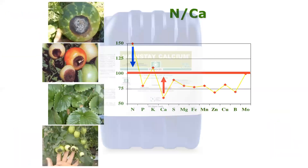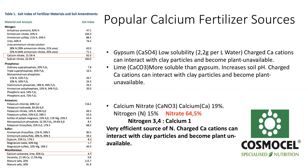Another issue with calcium nitrate is during stages when you want reproductive growth like fruit set — you don't want additional vegetative growth, which nitrogen promotes. Using a lot of nitrogen during critical reproductive stages like fruit set through calcium nitrate can lead to problems if you already have high nitrogen levels in your plant.